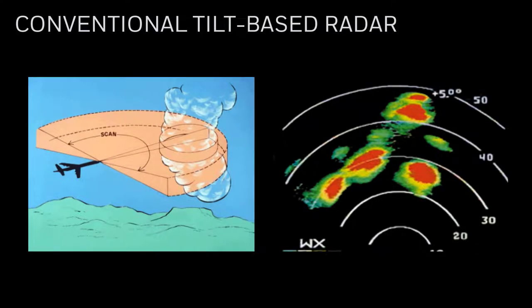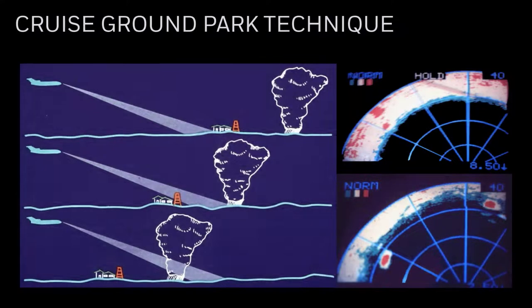The RDR 4000 is much easier to use but operates differently. It automates many tasks required by conventional radar in a different way. With a conventional tilt-based radar, the system sweeps an area ahead of the aircraft based on the selected tilt angle, with a one-to-one correspondence between the antenna sweep and what is shown on the display. For detection, most crews use the Crews Ground Park Technique — lowering the beam until ground returns appear at the outer edge of the display.